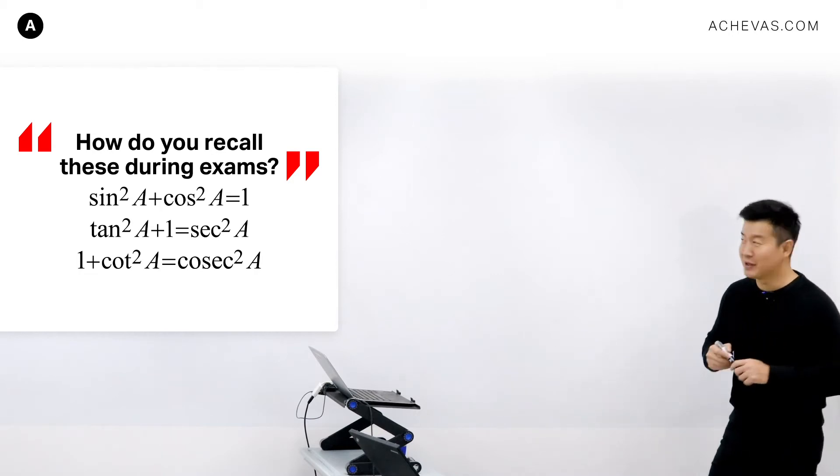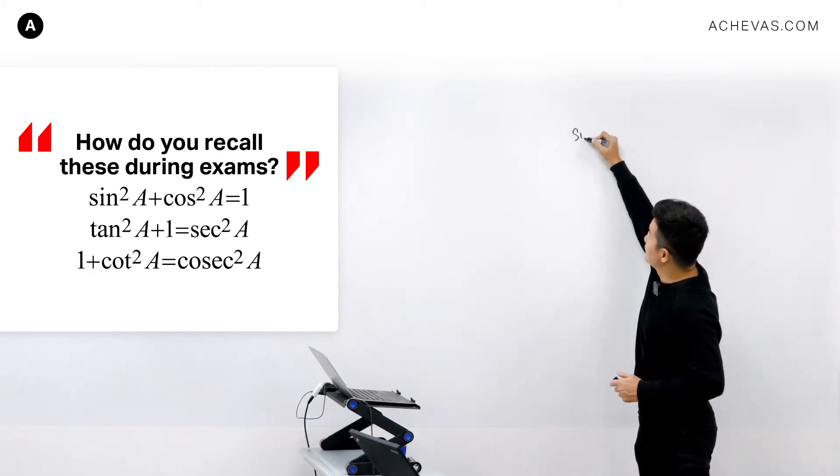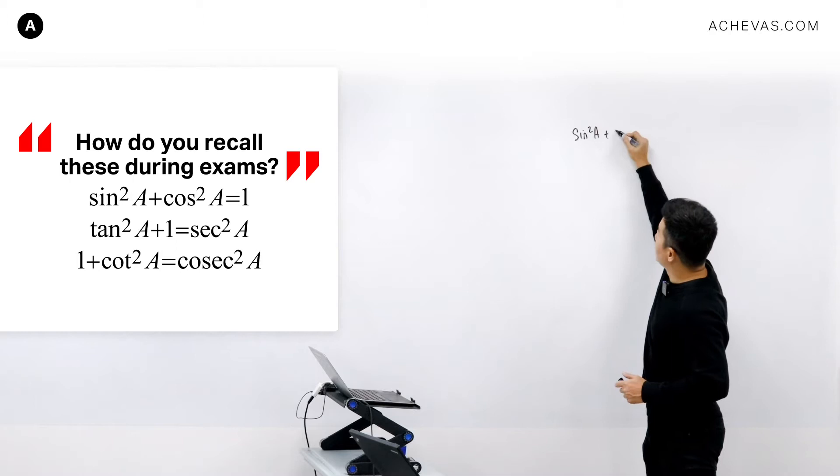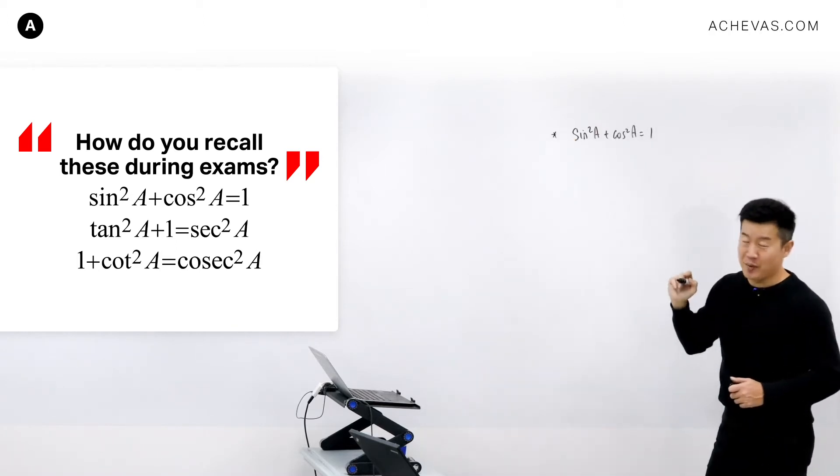Assuming you can at least remember the first identity, which is sin²A + cos²A = 1.